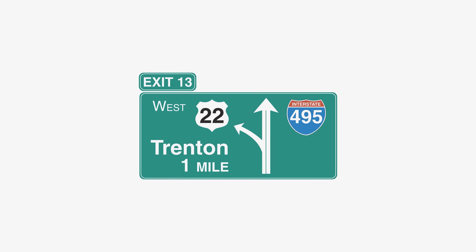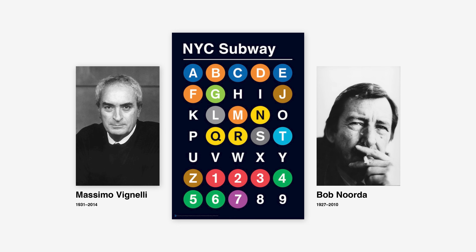Swiss design's emphasis on the use of grid systems and sans-serif typefaces ensures that signage is legible and organized, making it easier for individuals to find their way. The iconic wayfinding system of the New York subway, designed by Massimo Vignelli and Bob Noorda in the 1970s, was heavily influenced by Swiss design principles.